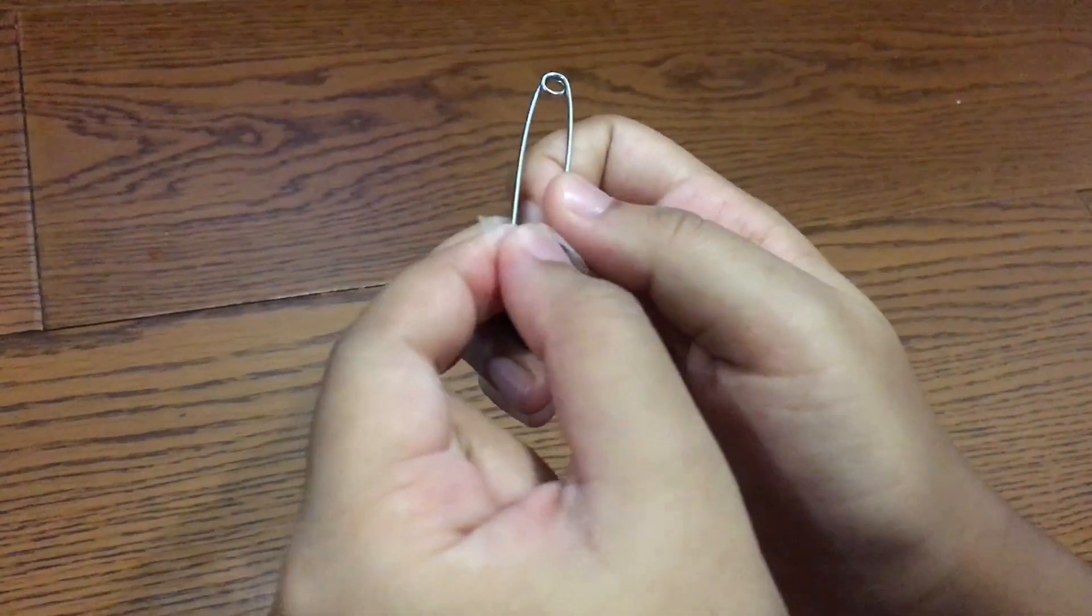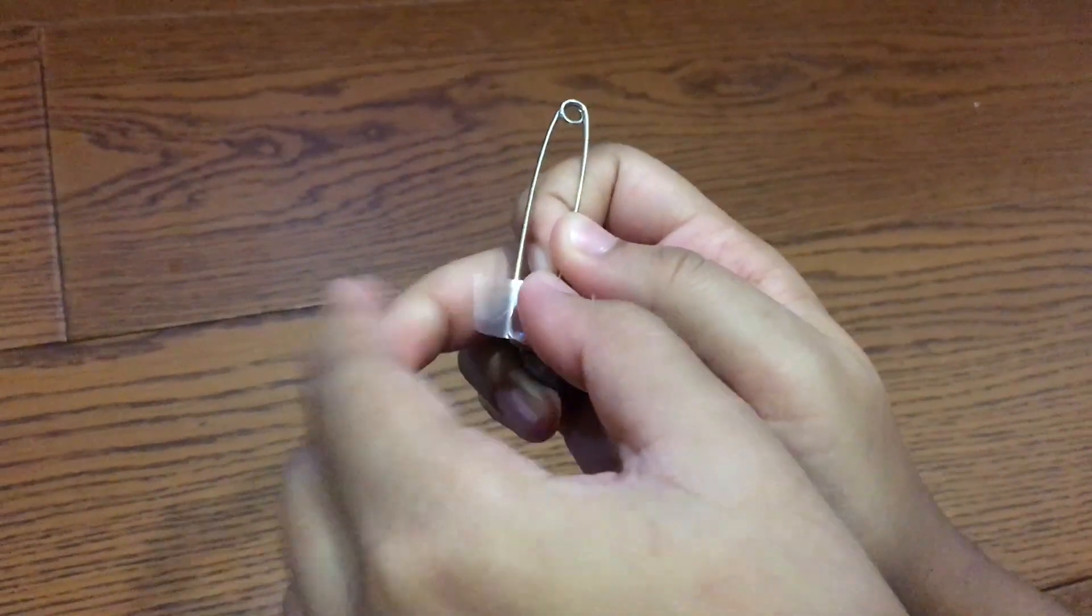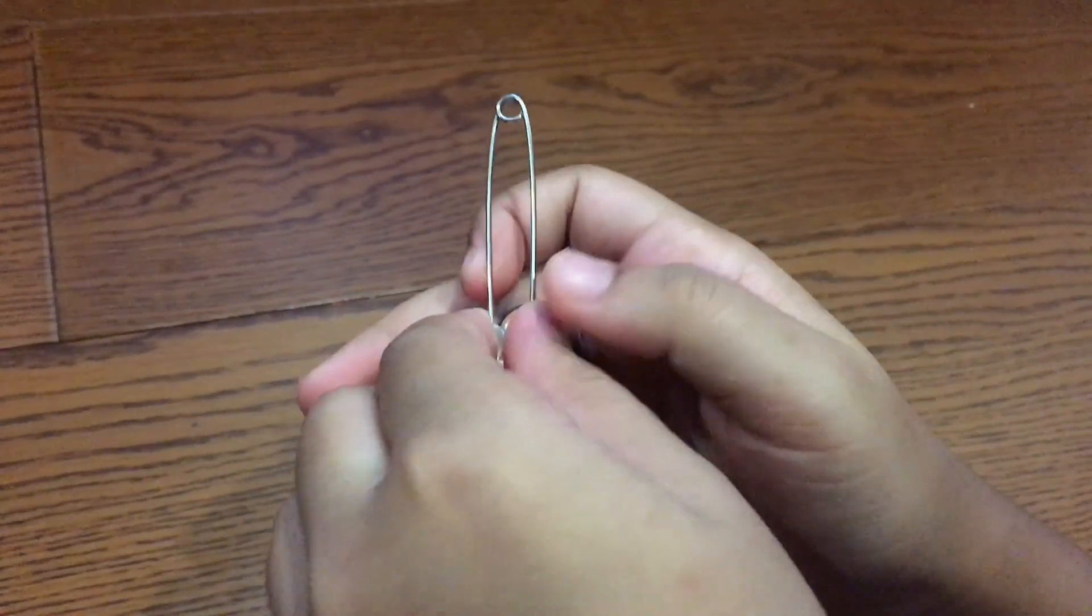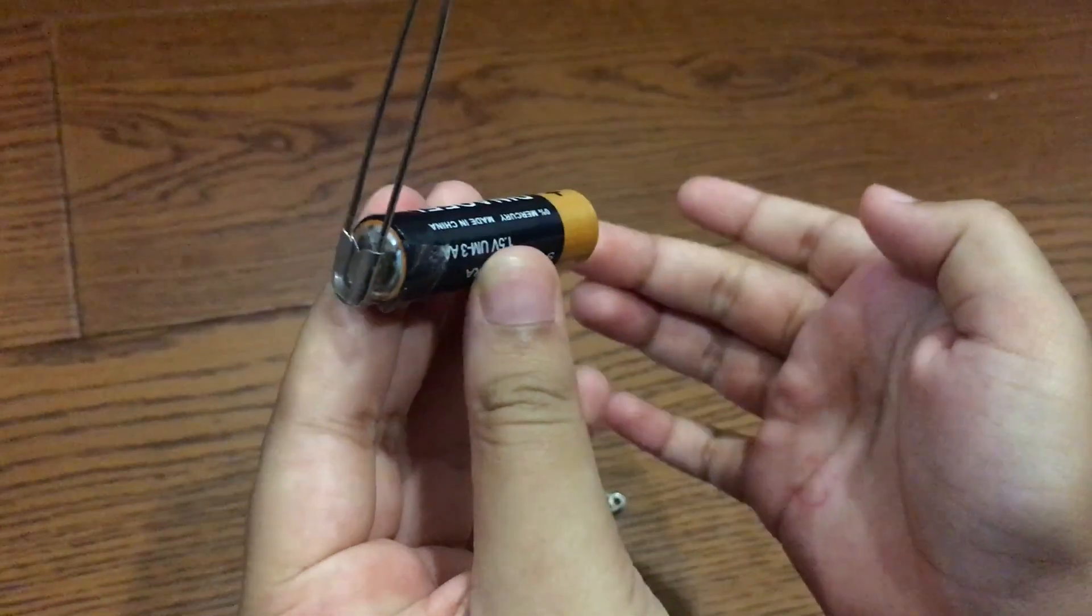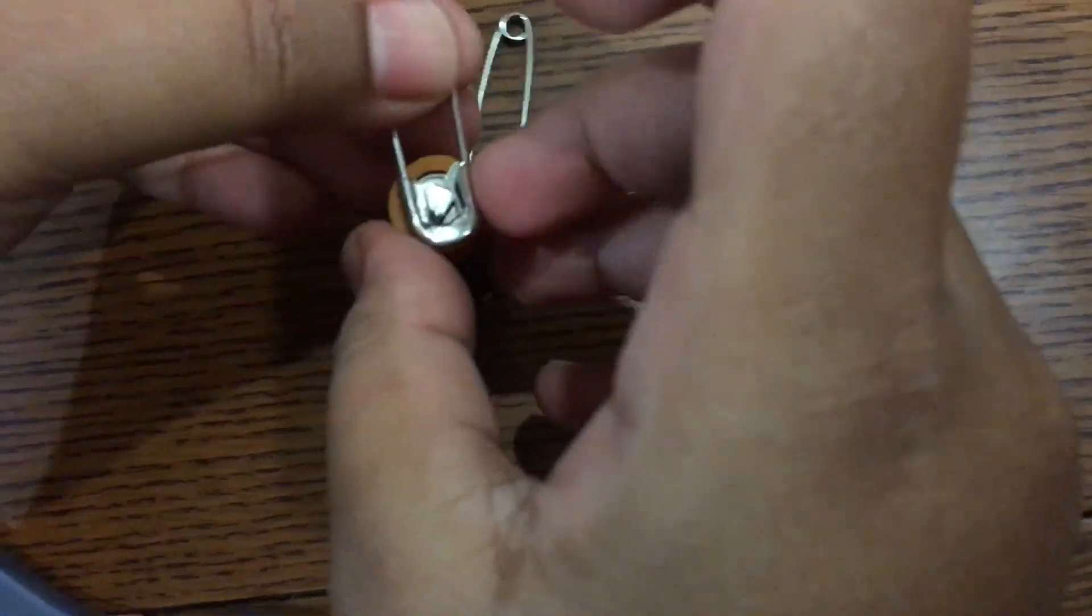First I will attach the safety pin to the side of the cell with the help of tape. Then I will do the same for the other side.